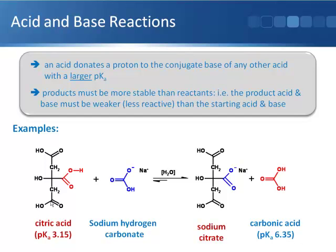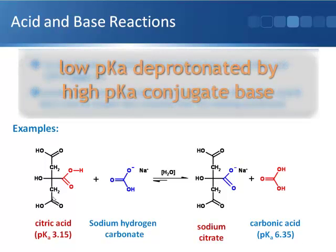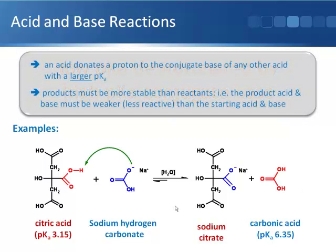So citric acid has a lower pKa so therefore it will be deprotonated by the conjugate base of this weaker acid here. So what we're saying is this reaction will occur where this negative charge can form a bond to this proton here and pull it off of citric acid so the reaction will occur.